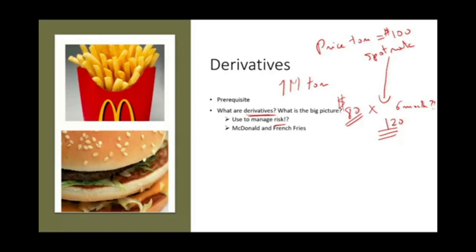What does that mean? It means for McDonald's, if they wait 6 months later to buy their potatoes needed for their business, McDonald's is not interested in taking the risk. There is a risk of waiting, because the price of potatoes could go up, it could go down, it could stay around $100. So what would McDonald's do? McDonald's will either buy an option contract — we talked about option contracts in the prior session — or they will buy what's called a forward contract.